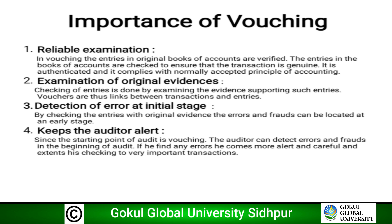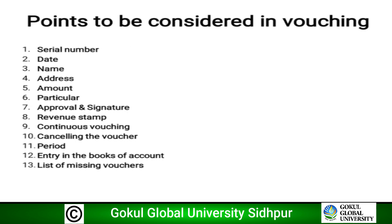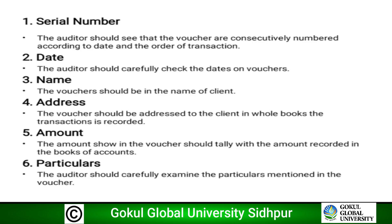There are thirteen points to be considered in vouching: serial number, date, name, address, amount, particulars, approval and signature, revenue stamp, continuous vouching, cancelling the voucher, period, entering in the books of account, and list of missing vouchers. Serial number: the auditor should see that vouchers are consecutively numbered according to date and order of transaction.